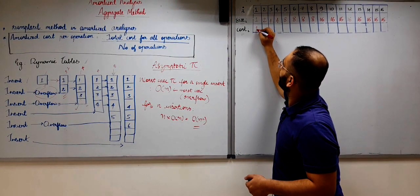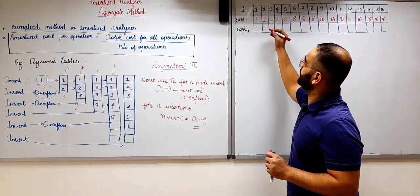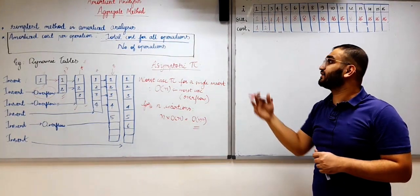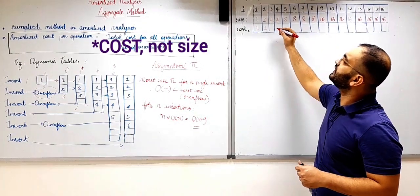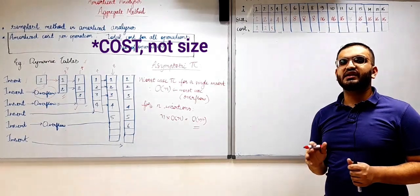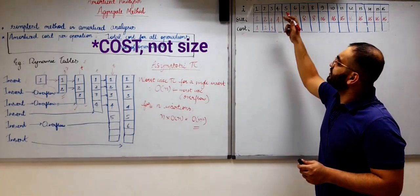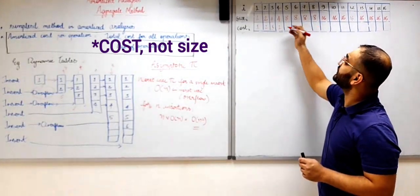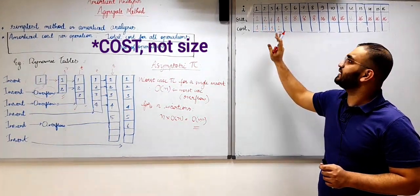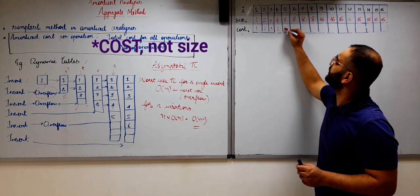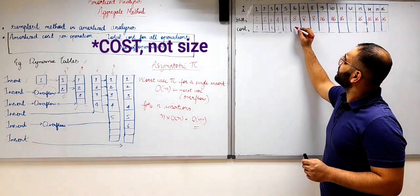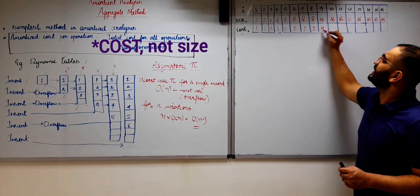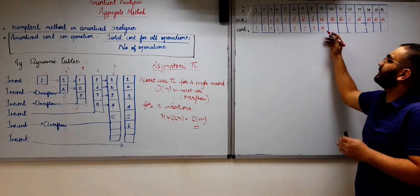Now let's find out the cost of each insertion. For the first insertion the cost is 1. For the second insertion the cost is 2, because we copy the first element and insert a new one. For the third insertion the cost is 3, copying the first two elements and inserting the new one. For the fourth insertion the cost is just 1 because there is no overflow. For the fifth insertion the cost is 5, the four previous elements plus the new one. For the sixth, seventh, and eighth insertions the cost is 1 each. For the ninth insertion the cost is 9, the eight previous elements plus the new one.